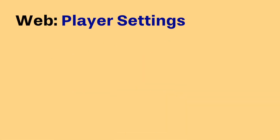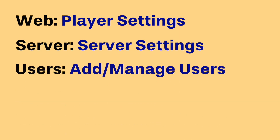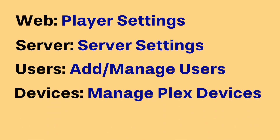Web is basically all the settings relating to the Plex web player itself. Server is all the server settings. Users is to add other users to your Plex account if you have a Plex Pass, or to add friends which is free. And Devices is just to see what devices are logged into your Plex account.